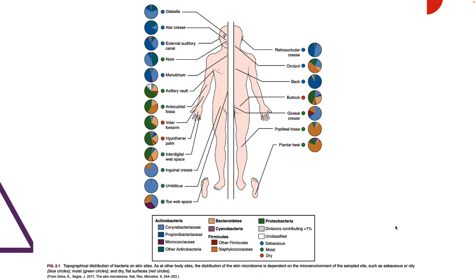Here the microbiome is being classified using only bacterial species, though there could also be archaea, viruses, and fungi associated with these different areas. One of the easiest taxonomic groups to characterize are the bacteria — we have a very well-known marker, the 16S rRNA gene sequence, that allows us to classify microorganisms down to most often the genus, but sometimes even the species level. So often when people talk about the microbiome, they do mean only the bacteria, but remember the microbiome can contain other organisms as well.